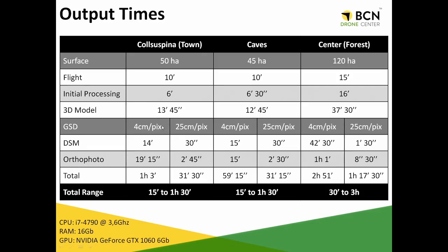If we are working at the highest resolution available — that is 4 centimeter per pixel with this drone setup — we will end up with the longer processing times. But if we don't need so much resolution, because maybe our application doesn't require it, we can get much shorter times. For example, we are going from one hour down to just eight minutes. So depending on whether we need high quality data or need it to be as fast as possible, we have the capability to choose the best setup for each application.